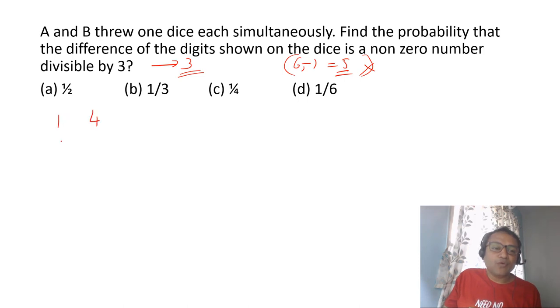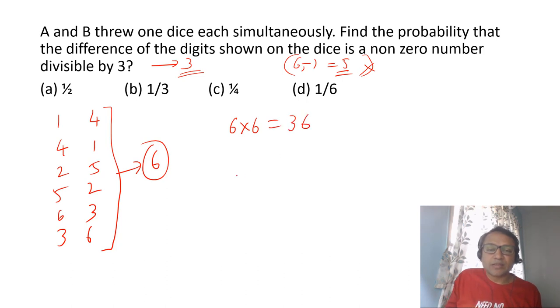If the maximum difference is 3, let's look at how 3 can come. You can have 1,4; 4,1; 2,5; 5,2; 6,3; and 3,6. So if you look at that, 6 ways where you can have difference as 3. Total number of ways of throwing 2 dice is 6 into 6, 36 ways. So the probability is 6 out of 36 or 1 out of 6, option D.